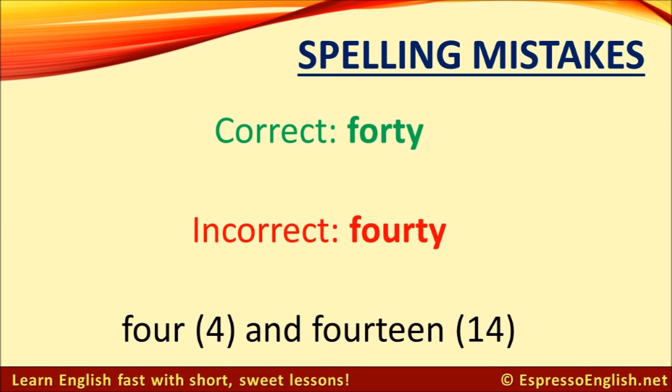English learners often get confused with the word 'forty' — that's four-zero. The word 'forty' does not have the letter U. The words 'four' and 'fourteen' both contain the letter U, but the word 'forty' does not.